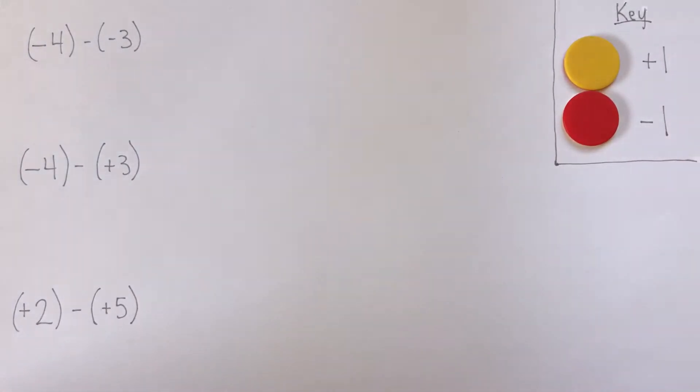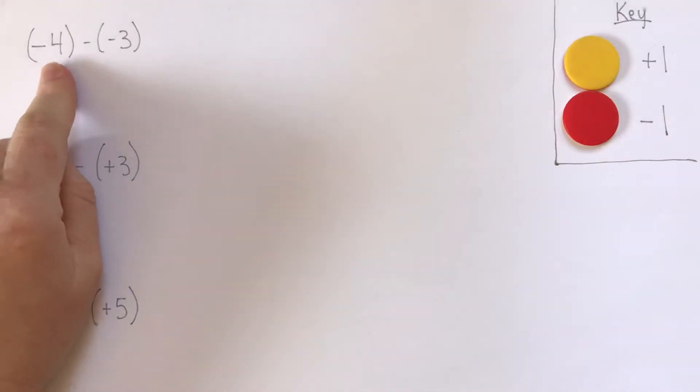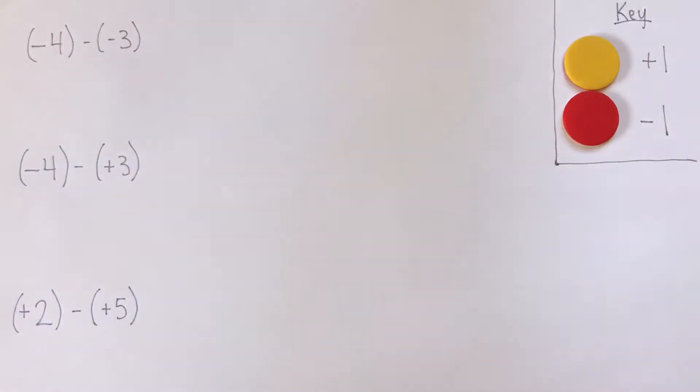When we subtract integers with two-color counters, basically what we do is we represent the first number, and then we just try to take away the second number. Sometimes it's really straightforward, and sometimes we have to represent the first number in a different way before we can take it away. I'll show you a few examples.